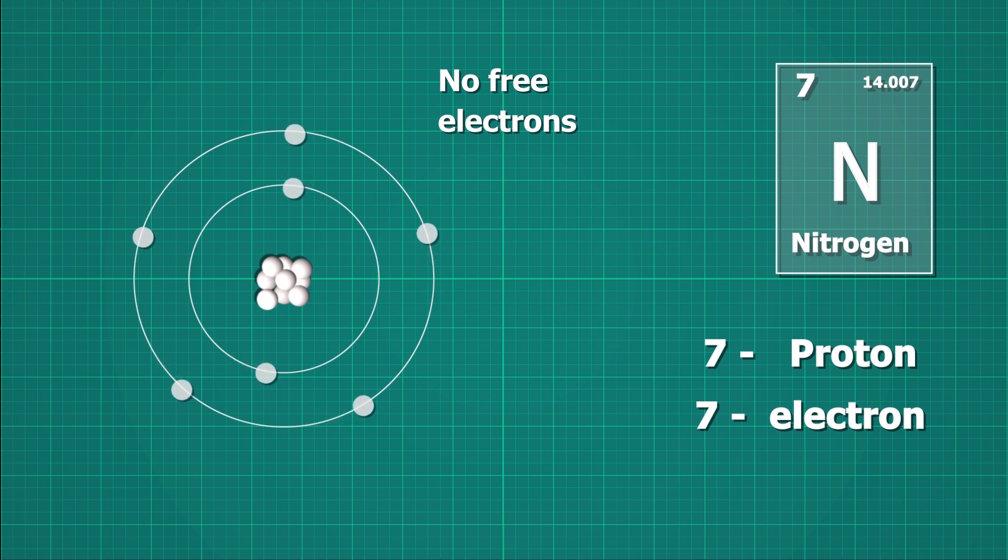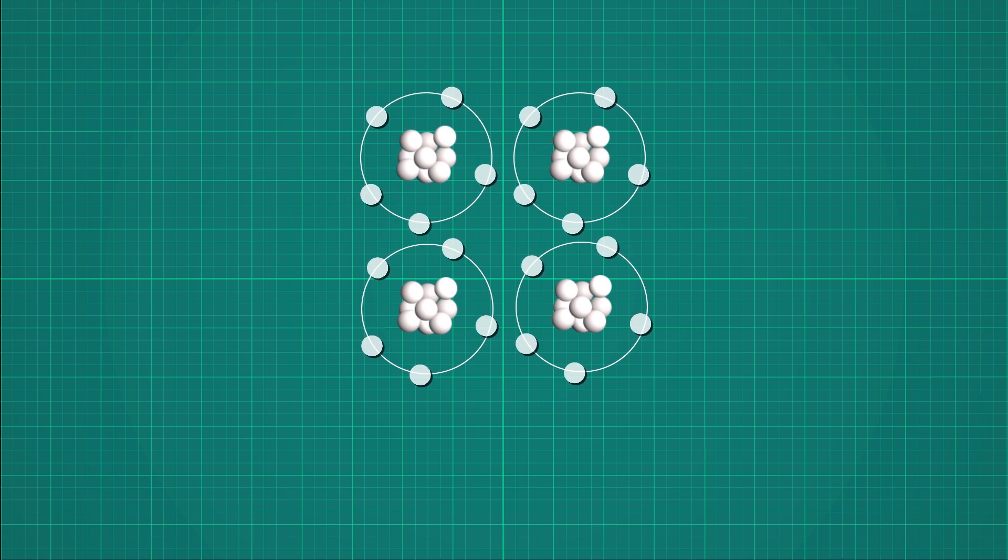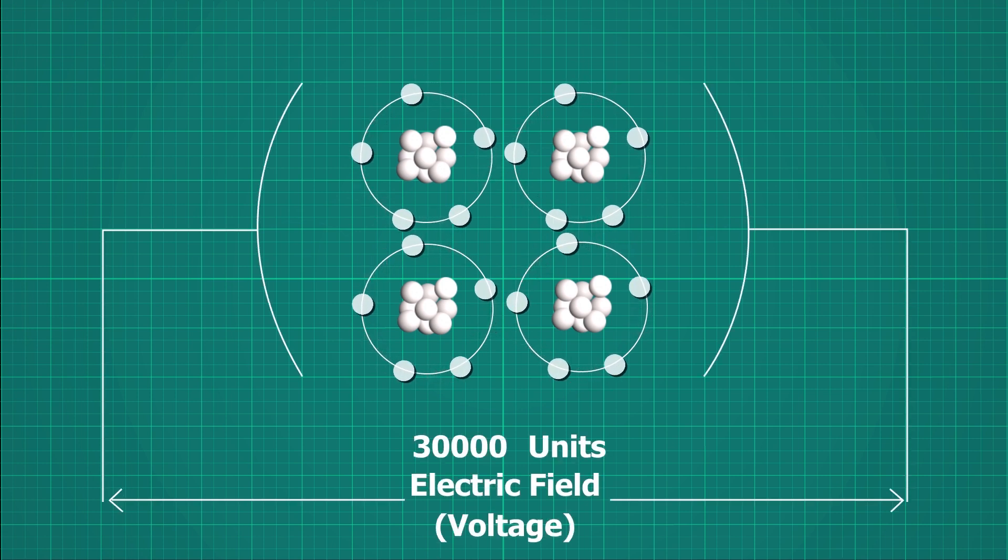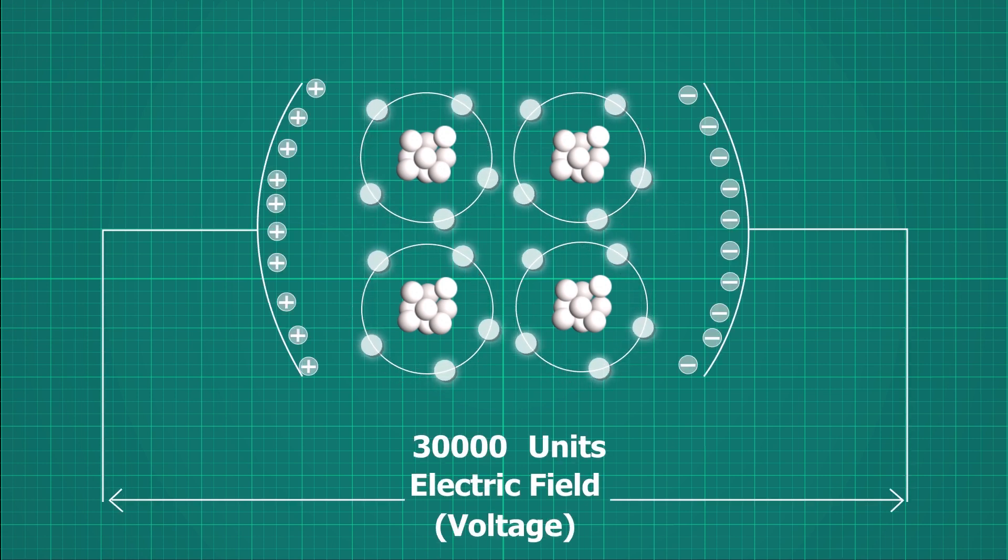So it does not allow movement of electron from one atom to another. But any atom has its limit to hold the electrons within atom. When some external force or electric field is applied to nitrogen, outer shell electrons experience a pulling force and acquire kinetic energy.